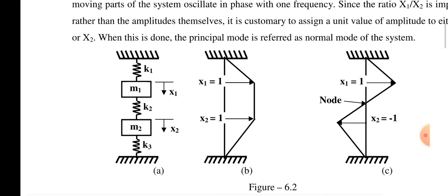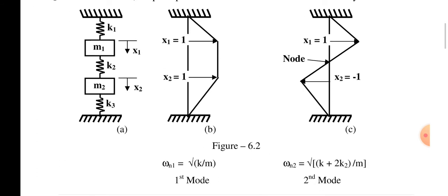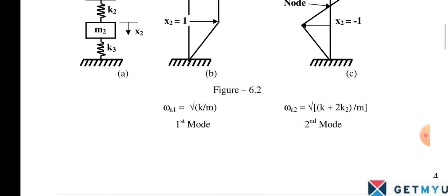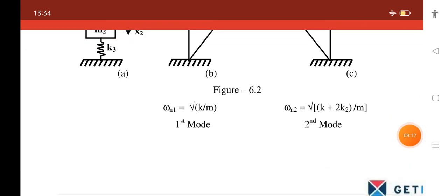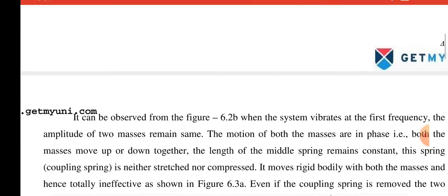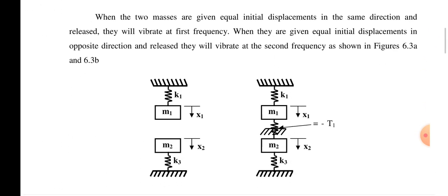As shown in the figure, the system has masses m1, m2 and springs k1, k2, k3. For the first mode, x1 = 1 and x2 = 1, meaning both masses move in the same direction. For the second mode, x1 = 1 and x2 = −1, meaning the masses move in opposite directions. The first mode natural frequency is ωn1 = √(k/m) and the second is ωn2 = √((k + 2k2)/m).